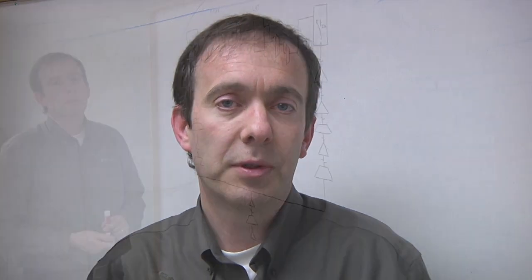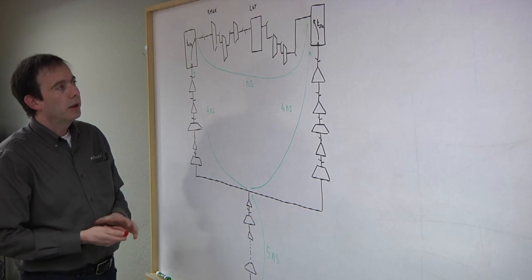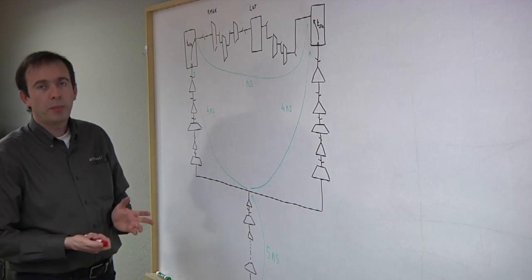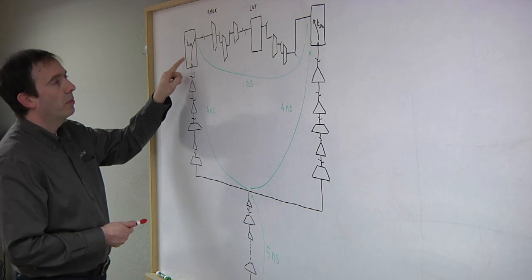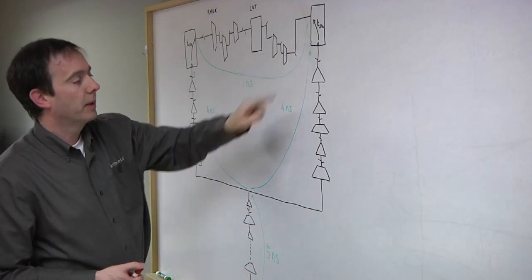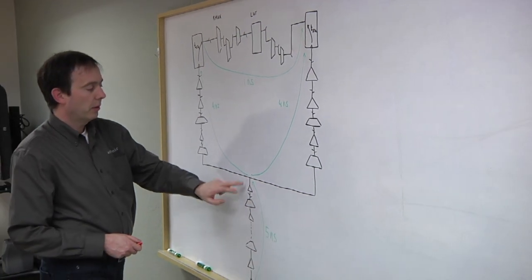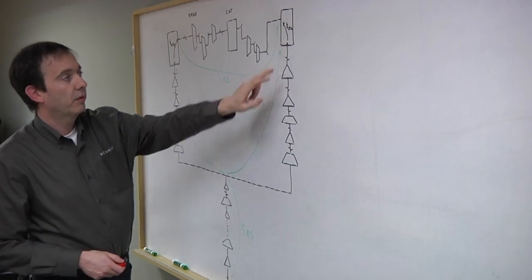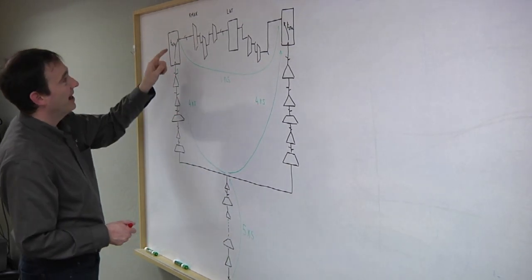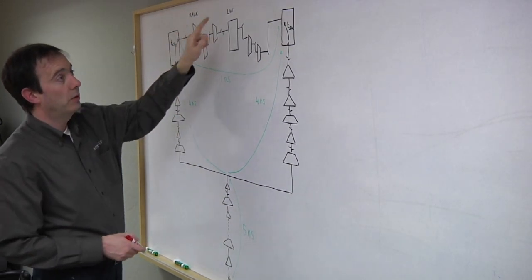Why don't you draw this out for us? Sure. I'll draw a timing path starting from a flop and ending on another flop, showing how the clocks are distributed between these two flops, plus a data path between them. Here you see a schematic of a typical path between a launching flop and a capturing flop. The clock comes from a common starting point and gets distributed to the launching flop and the capturing flop, and then there's a data path from the launching flop to the capturing flop.